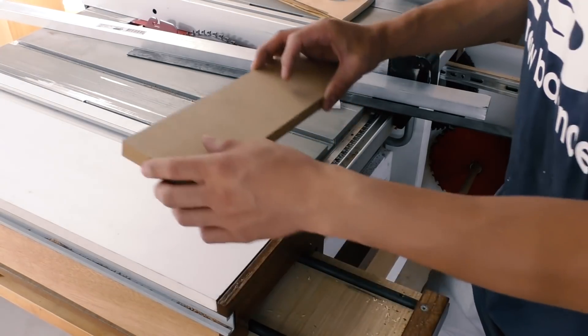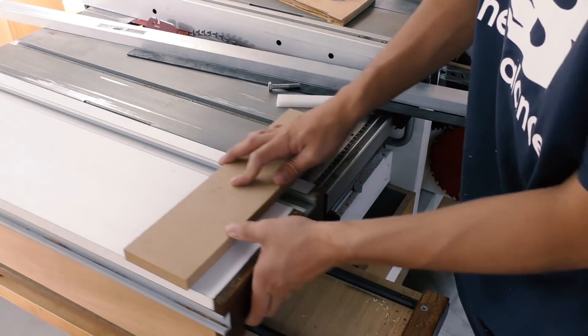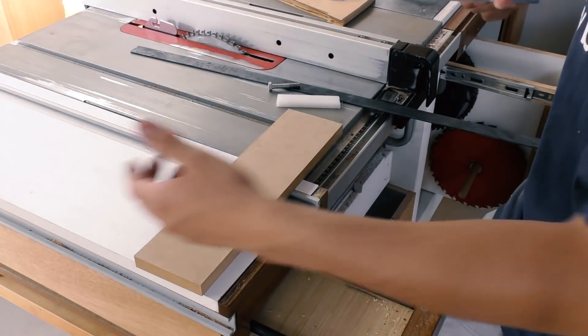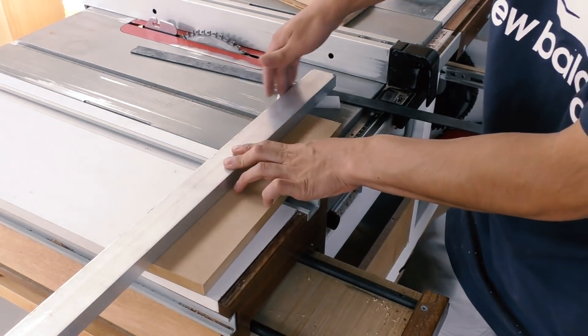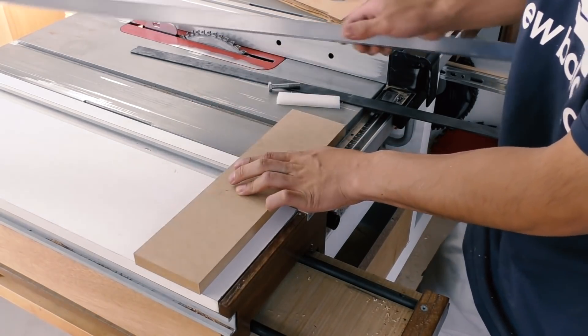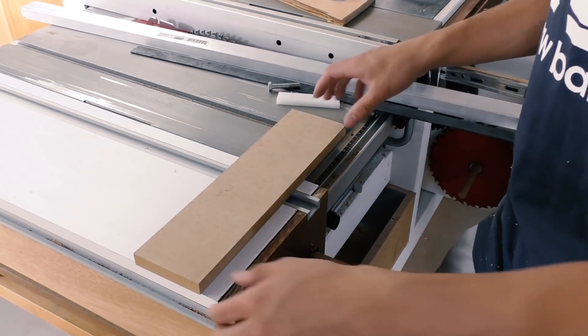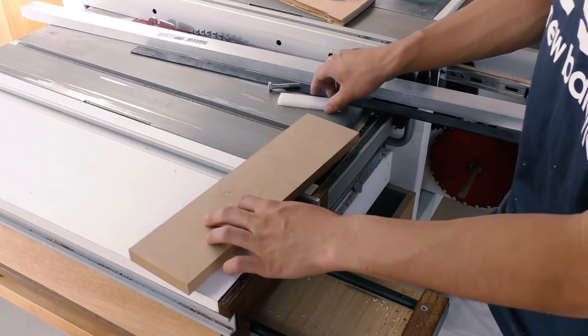So the idea is that I'll use this piece of MDF as a base to mount everything on, have the aluminum as a fence since the aluminum guarantees that it's 90 degrees.